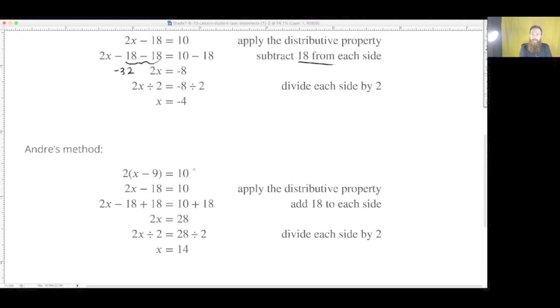And Andre's method, apply the distributive property correctly. Added 18, right? Since we're subtracting 18, we need to add 18. Or we can subtract negative 18. It's correct. That's correct, correct, correct. And if we were to plug this in, we would see that it is true.